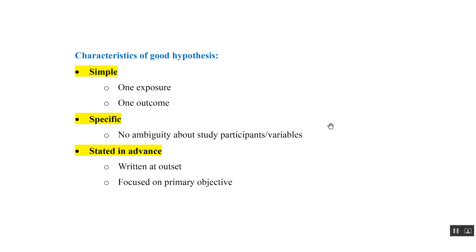Characteristics of a good hypothesis. First, it has to be simple — if there is one exposure and one outcome, it makes the hypothesis good. Second, it should be specific: there should be no ambiguity about who will be the study participants, what will be the exposure, and what will be the outcome. Both variables — exposure and outcome — should be very clear and specific.